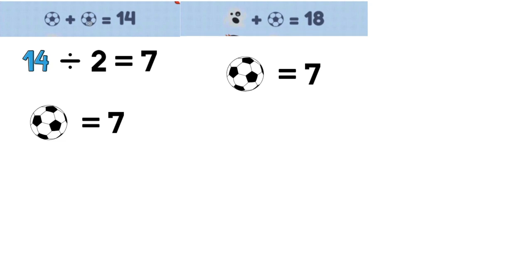simply subtract 7 from 18. 18 minus 7 equals 11. Now we know ghost is equal to 11.